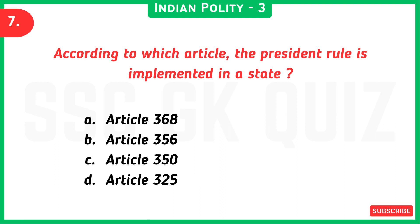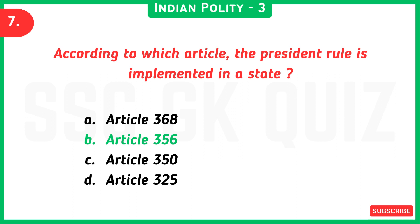Next question: according to which article is President's Rule implemented in a state? Answer is option B, Article 356.